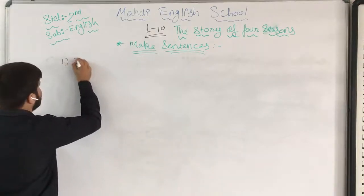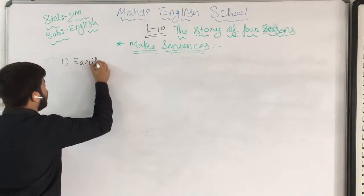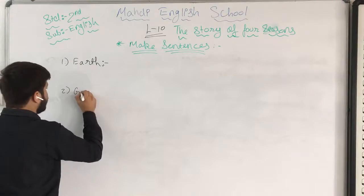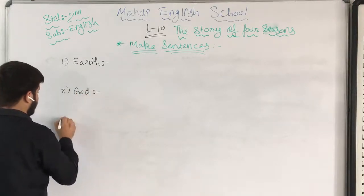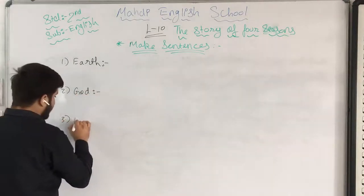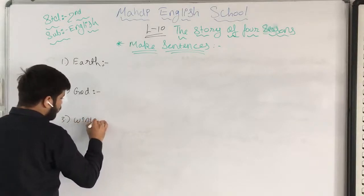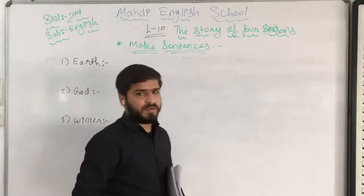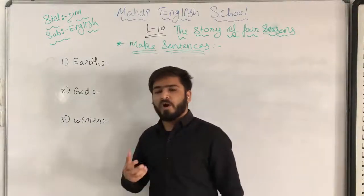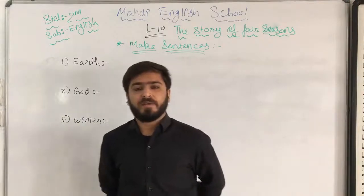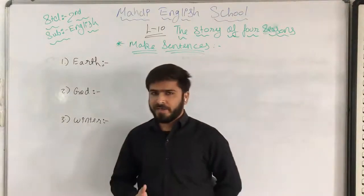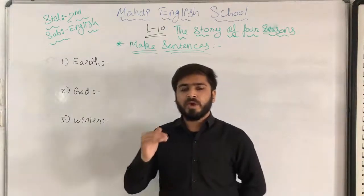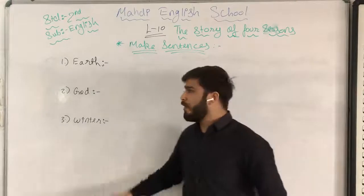Number one — earth. Number two — God. Number three — winter. I have written three words. Think about what kind of sentences you can make. If you try to make them yourself, whether correct or incorrect, you will bring your level up. Try to think about it. I will give you a few seconds.